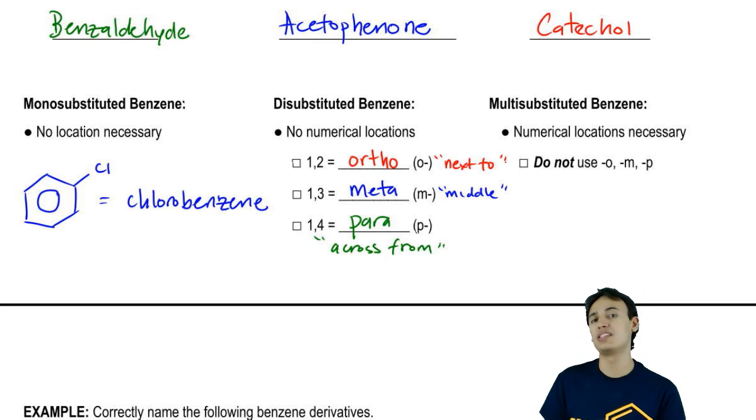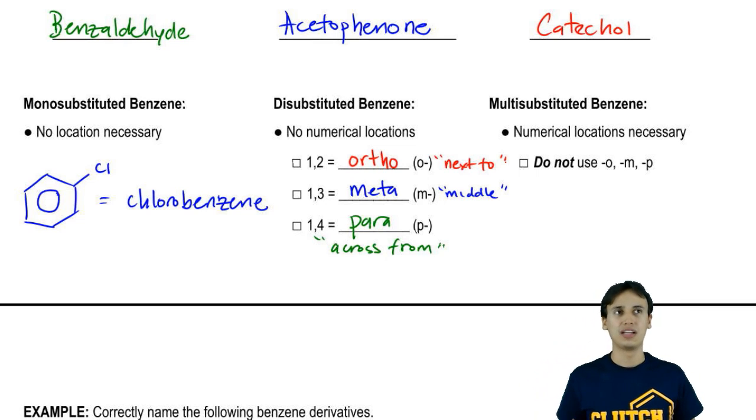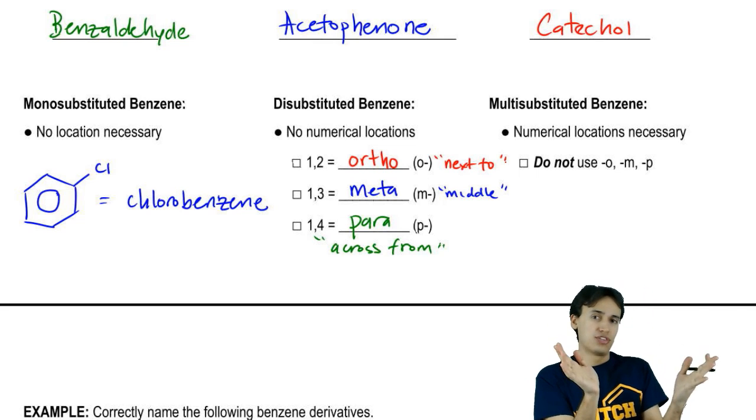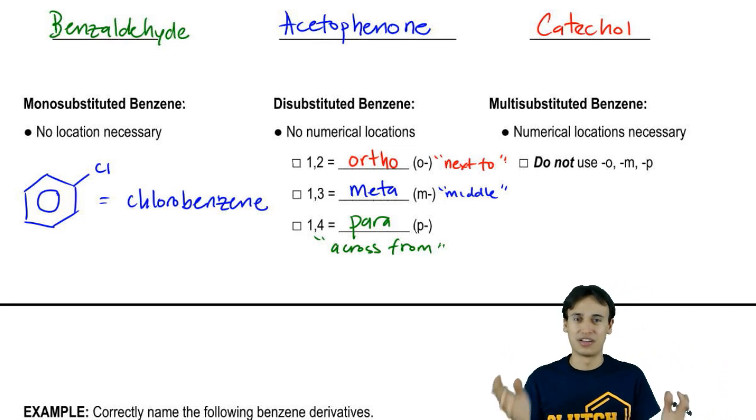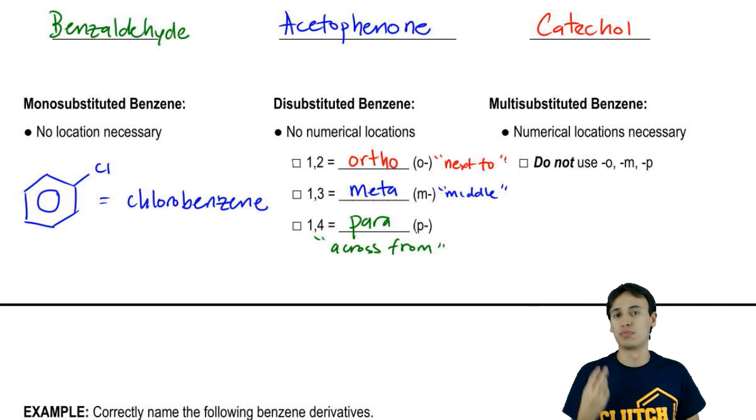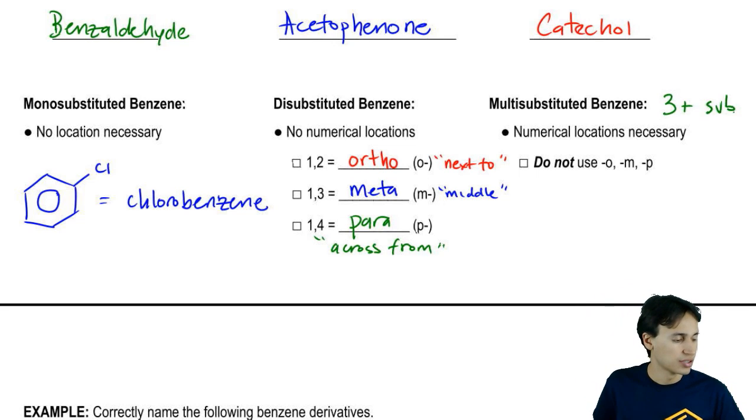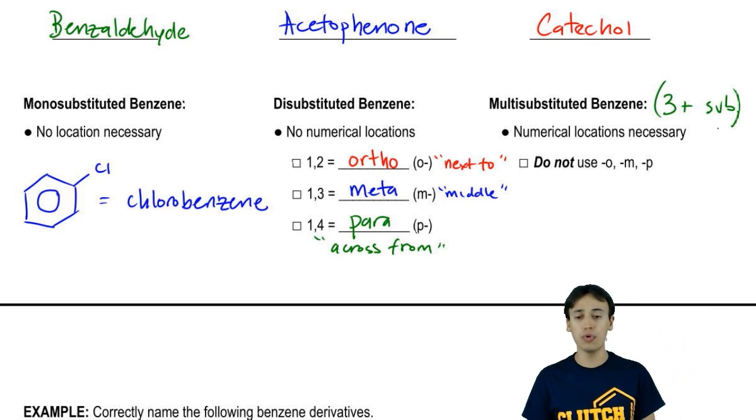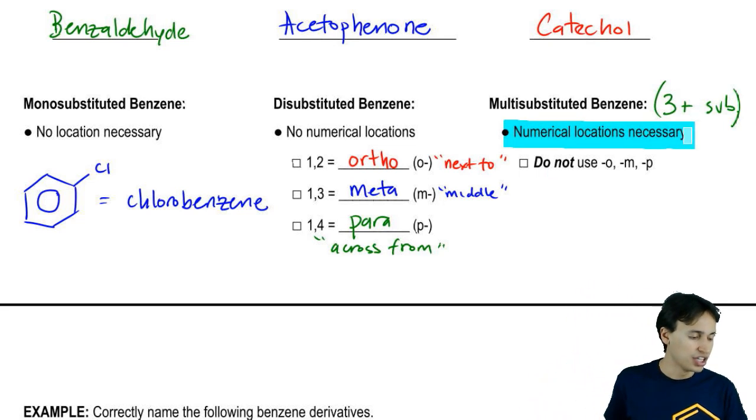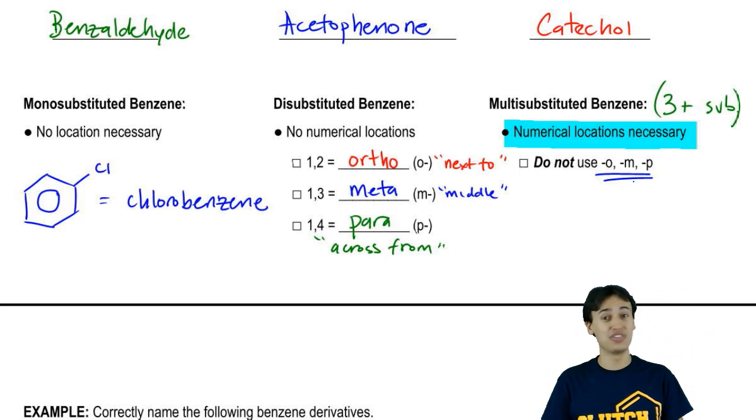But what happens, guys, if your benzene has three substituents on it? You can't use ortho meta para anymore because it's going to be very confusing. Are you talking about that the first two groups are meta to each other or the first and the third group are meta to each other? It doesn't make sense. The system breaks down if you have more than two. That's what we call multi-substituted benzene. That would be three or more substituents. If you have three or more, then numerical locations are necessary. You can't use ortho meta para. If you use it, pardon my French, you look like you don't understand what O, M, and P mean.